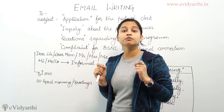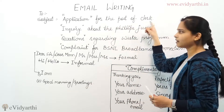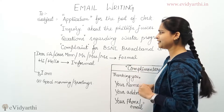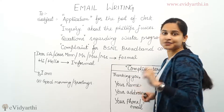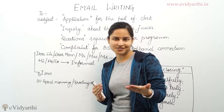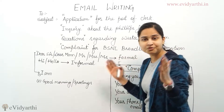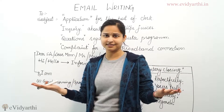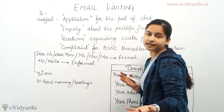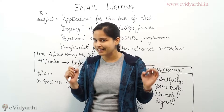You should be very much specified and to the point while writing the subject. For example, if you write 'application for the post of club,' it is very much specified and appropriate. If you write 'inquiry about the Philips juicer,' that is also appropriate and to the point. 'Questions regarding Vista program' — meaning you want to ask questions about the Vista program. And 'complaint for the BSNL broadband connection' — these are appropriate and complete subject lines.